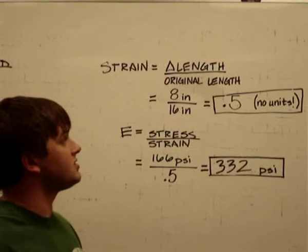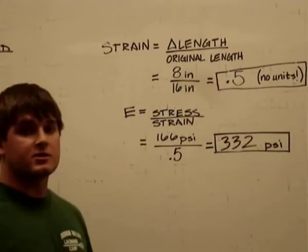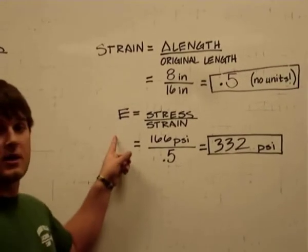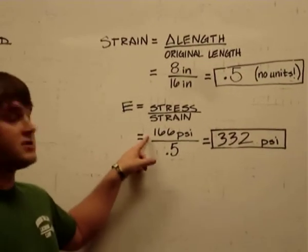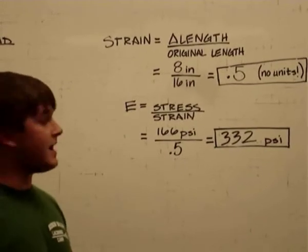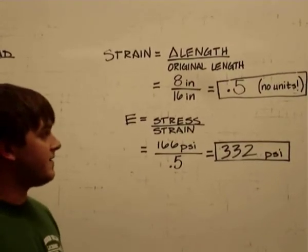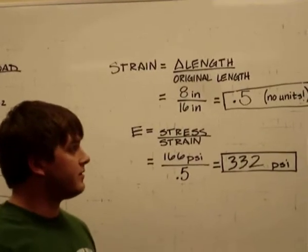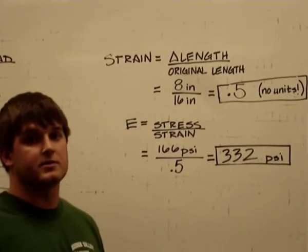Using our stress and strain values that we just calculated, we're going to find Young's modulus of elasticity. If the stress was 166 psi and the strain was 0.5, that gives us a modulus of elasticity of 332 psi, pounds per square inch.